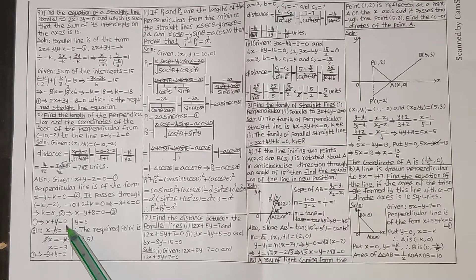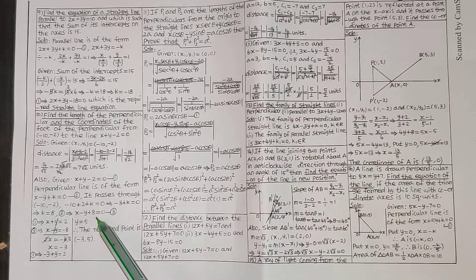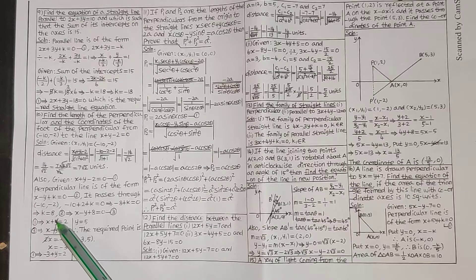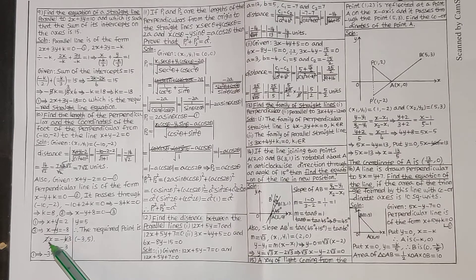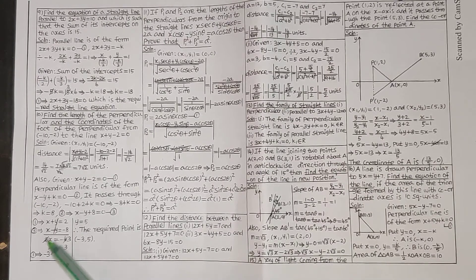Solving the system: first equation x plus y equals 2, and second x minus y equals minus 8. Adding gives y equals 5. So the required point, the foot of the perpendicular, is minus 5 comma 3.